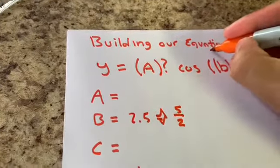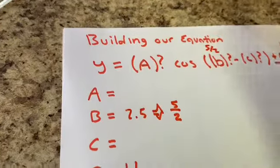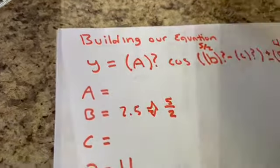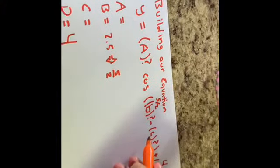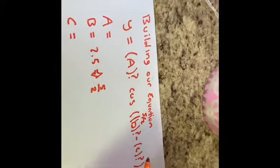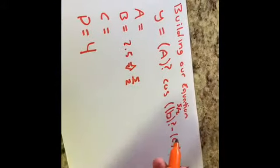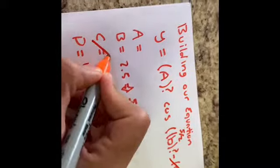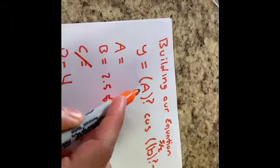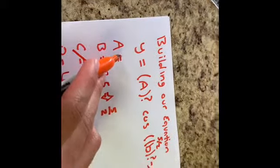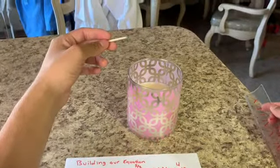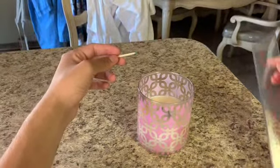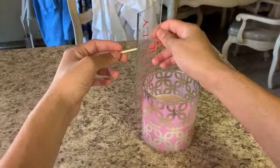Now that we have solved our b, we still have to find if there's a c and an a. There's no need to check for c because there is no phase shift in this candle. Now all that's left is to check the amplitude, which is a. To find the a, we have to measure the height of the candle where it is in my hand. We have to take out our ruler. It is 8 inches high.